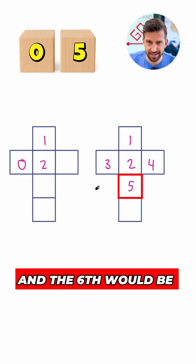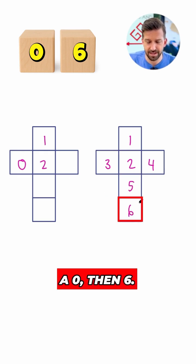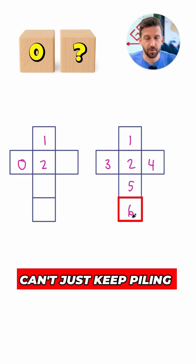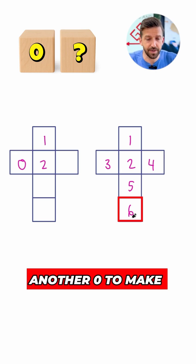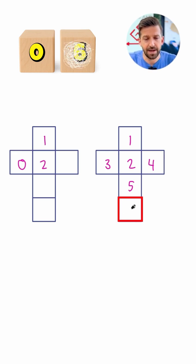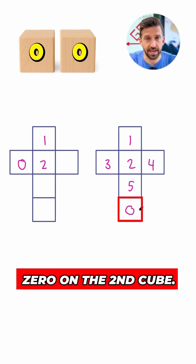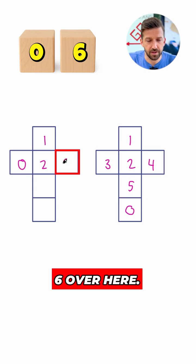What about the fifth? That's a zero, then a five. And the sixth would be a zero, then a six. What about the seventh? Can't just keep piling more numbers over here. I'm going to need another zero to make this work. So let's get rid of that six and let's put a second zero on the second cube and then let's put the six over here.